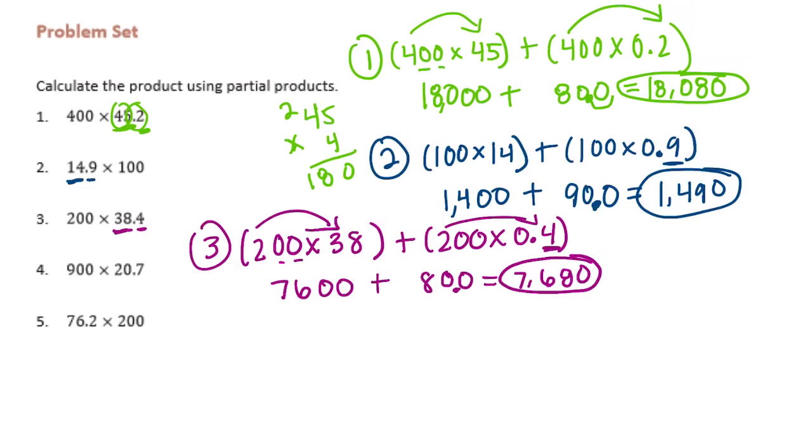Number 4, 900 times 20.7. I'm going to split it into 20 and 0.7 and we'll have 900 times 20 plus 900 times 0.7. So 900 times 20, 9 times 2 is 18 with 1, 2, 3 zeros, so 18,000.